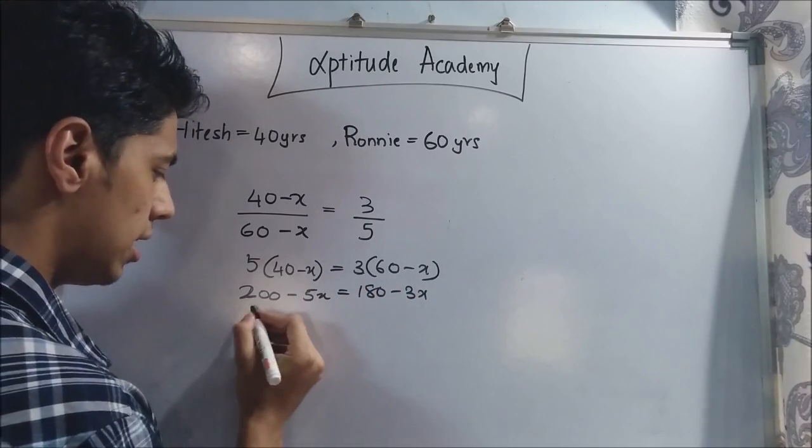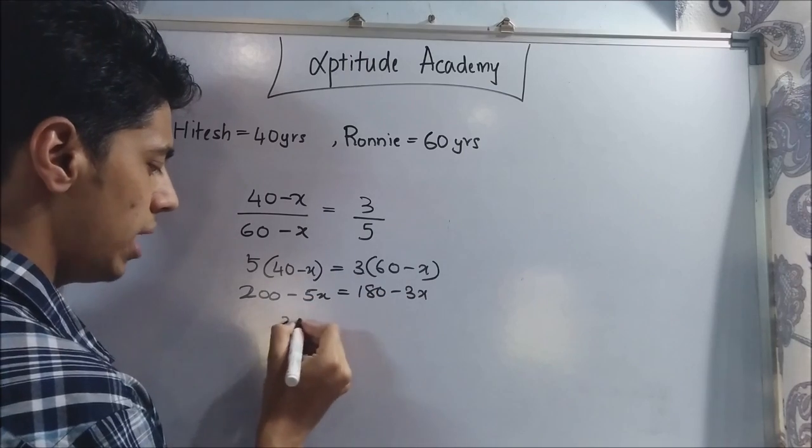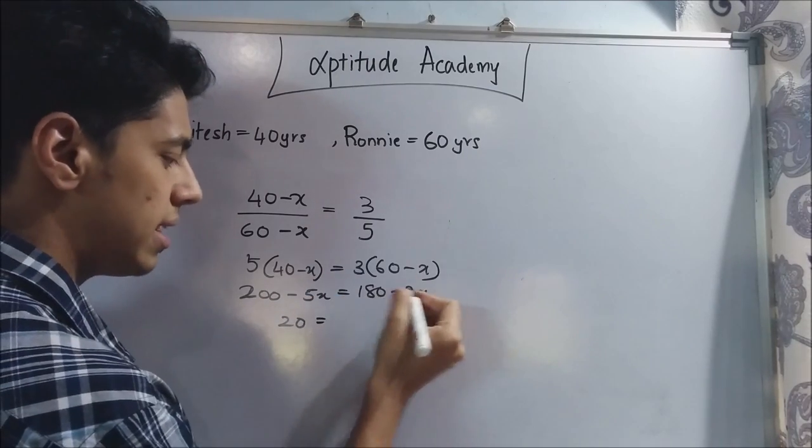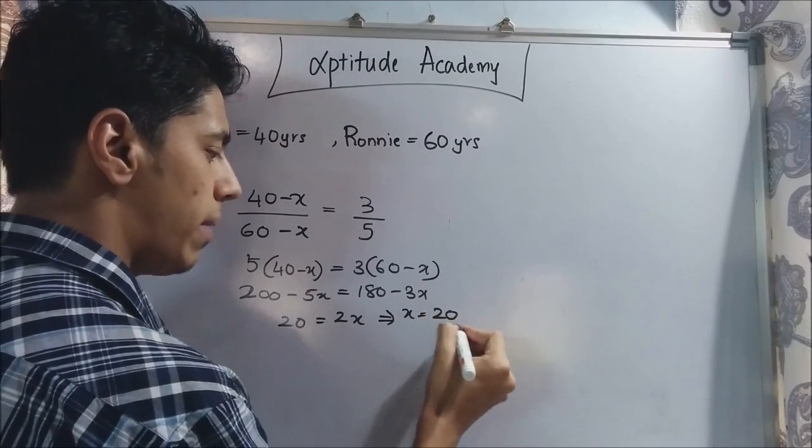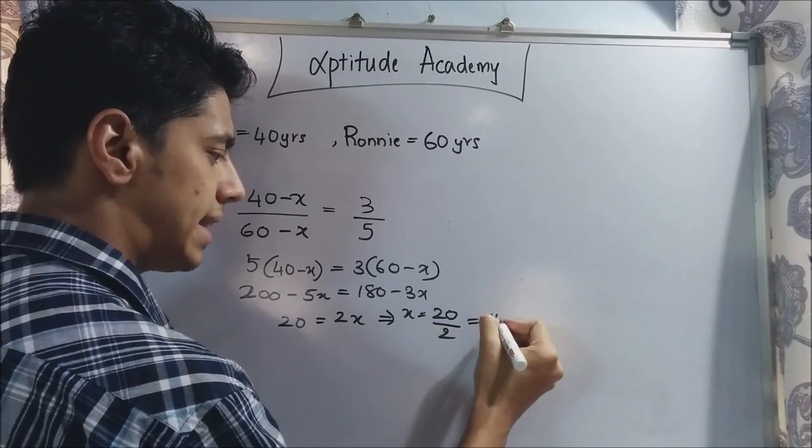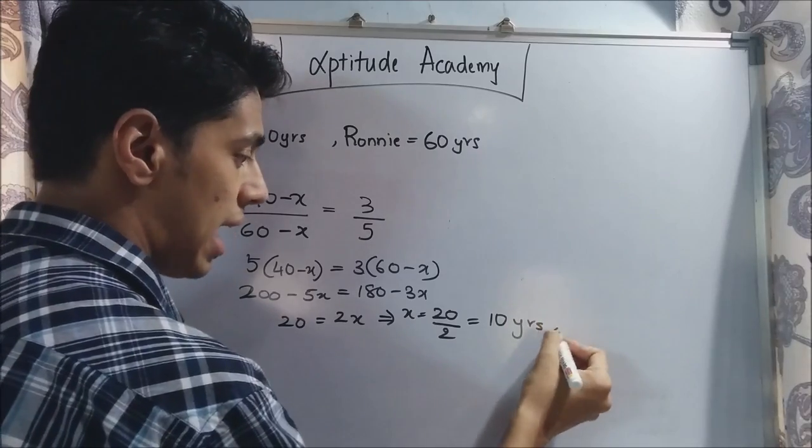Now take 180 here and take 5x. So 200 minus 180 will be 20 and 5x minus 3x will be 2x. x is equal to 20 by 2 or 10. 10 years. So the answer is 10 years.